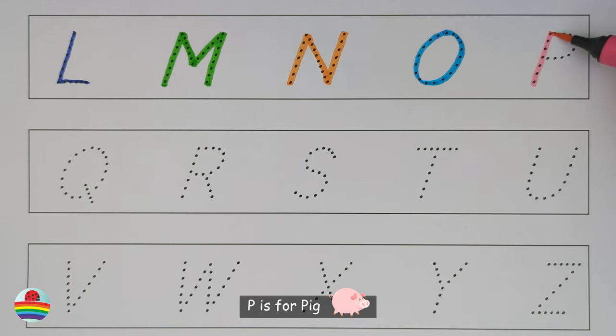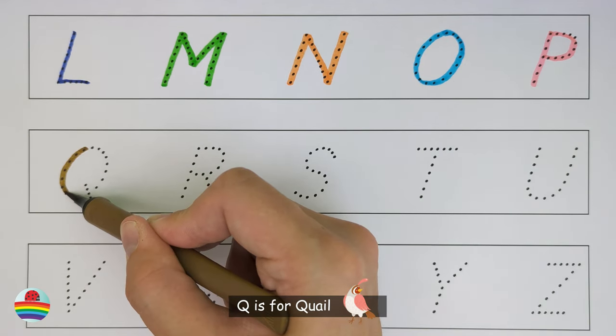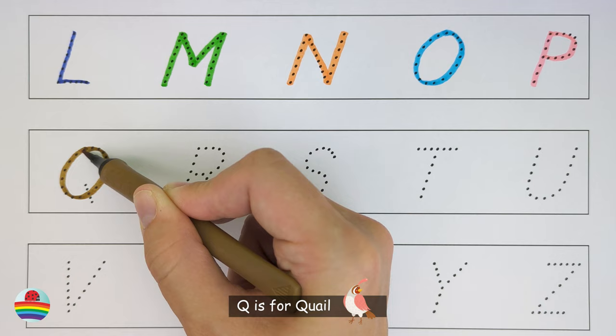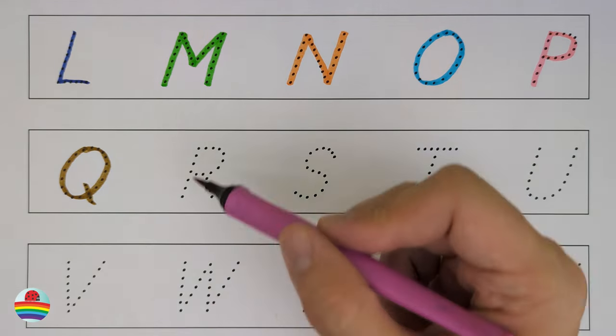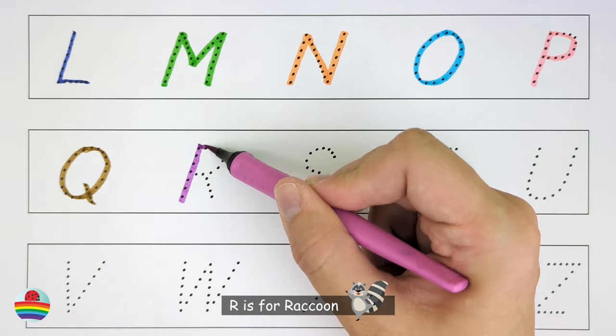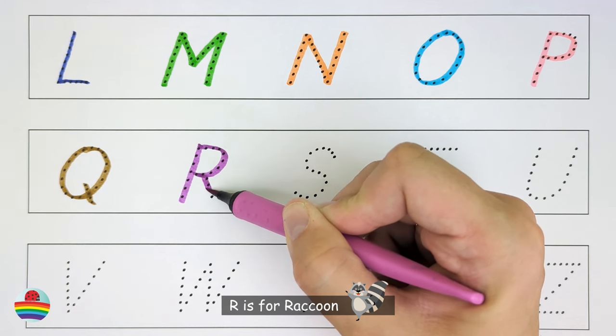P. P is for Pig. P. Q. Q is for Quail. Q. R. R is for Raccoon. R.